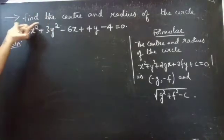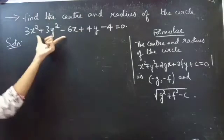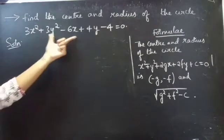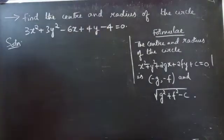Problem: find the center and radius of the circle 3x squared plus 3y squared minus 6x plus 4y minus 4 equals to 0.